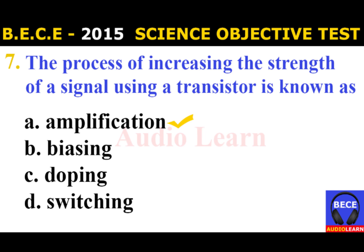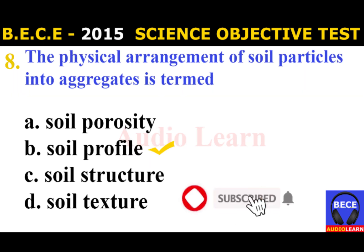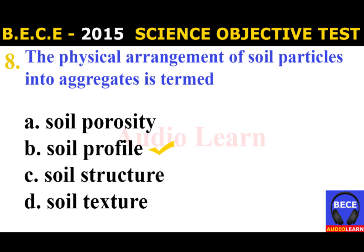Number 8: The physical arrangement of soil particles into aggregates is termed A. Soil portfolio [soil profile]. The answer is B. Soil profiles. The physical arrangement of soil particles into aggregates is termed soil profile.